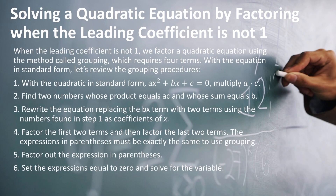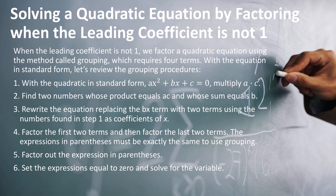Solving a quadratic equation by factoring when the leading coefficient is not one. When the leading coefficient is not one, we factor a quadratic equation using a method called grouping, which requires four terms. With the equation in standard form ax² plus bx plus c equals zero, multiply a times c — sometimes called the AC method. Find two numbers whose product equals a times c and whose sum equals b. In the previous examples, our leading coefficient was one, so we looked for numbers multiplying to c; in reality we were finding numbers multiplying to a times c.